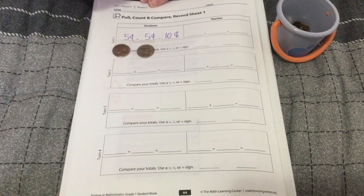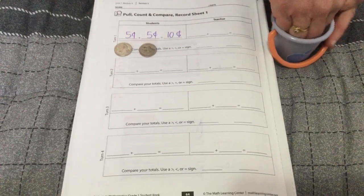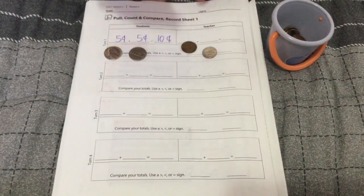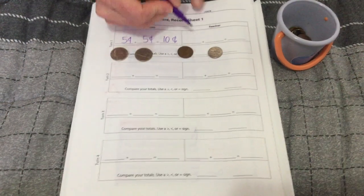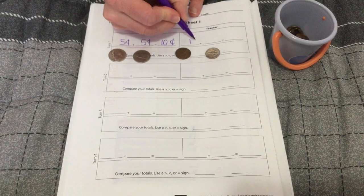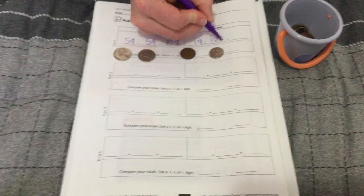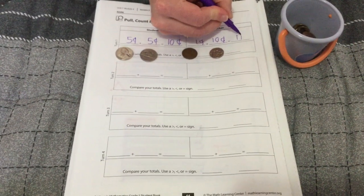I'm going to compare that when I pull out two more coins. This time I pulled out a penny and a dime. One cent plus ten cents equals eleven cents.